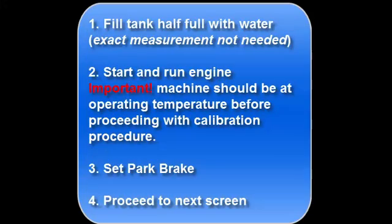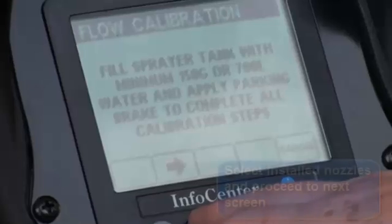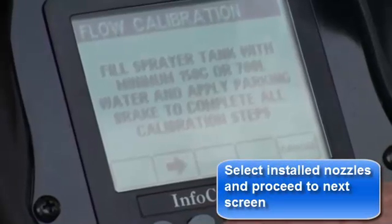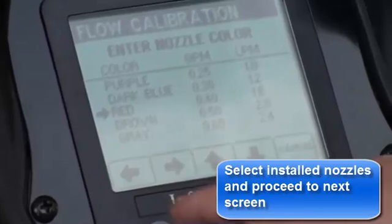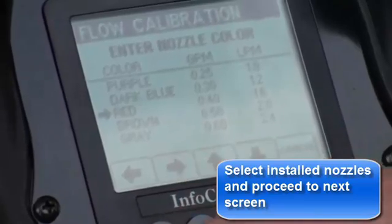Fill the tank half full with water. Start and run the engine — the machine should be at operating temperature before proceeding with calibration. Set the park brake, proceed to the next screen, then select installed nozzles and proceed.